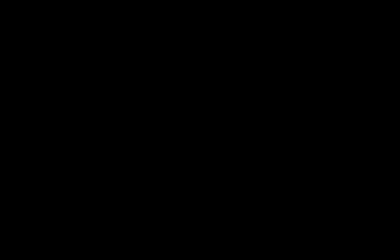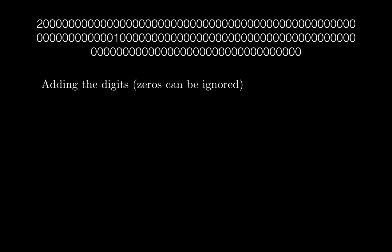Let's see what happens with our large number. I'm going to add the digits. Because there are so many zeros, I can ignore them since they don't contribute to the sum. The only non-zero digits are 2 and 1, so adding them gives 3, which is of course divisible by 3. This confirms the number is divisible by 3 — much easier than typing the whole number into a calculator.